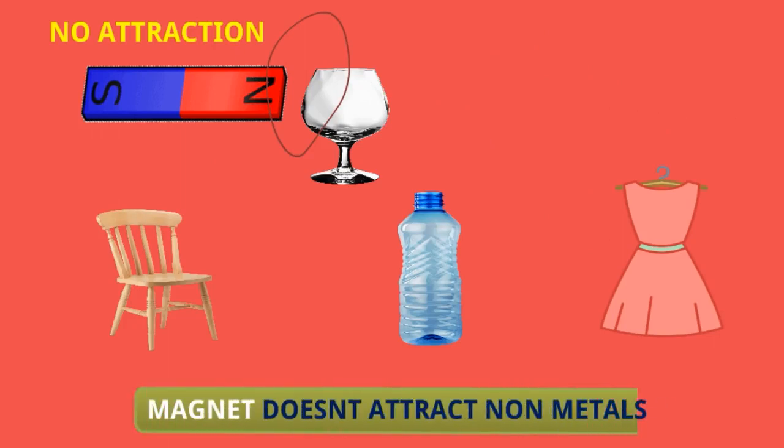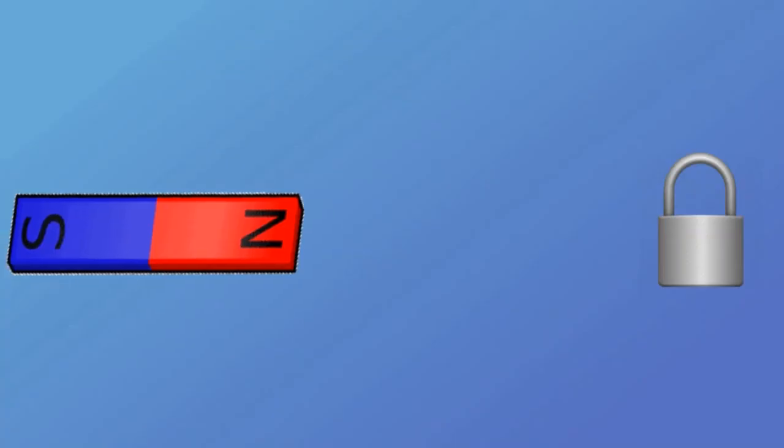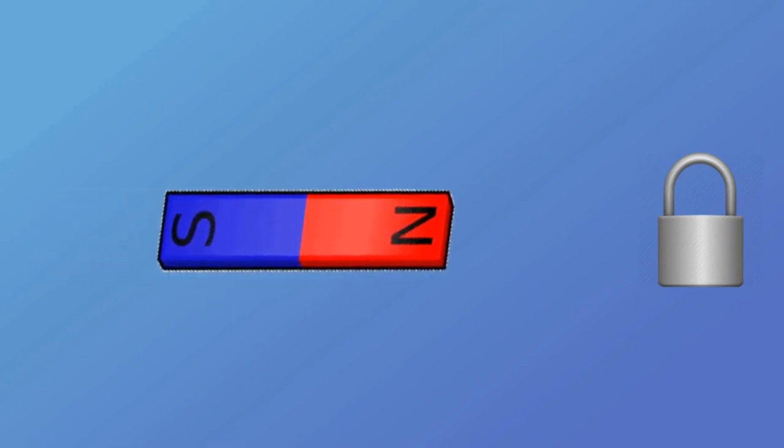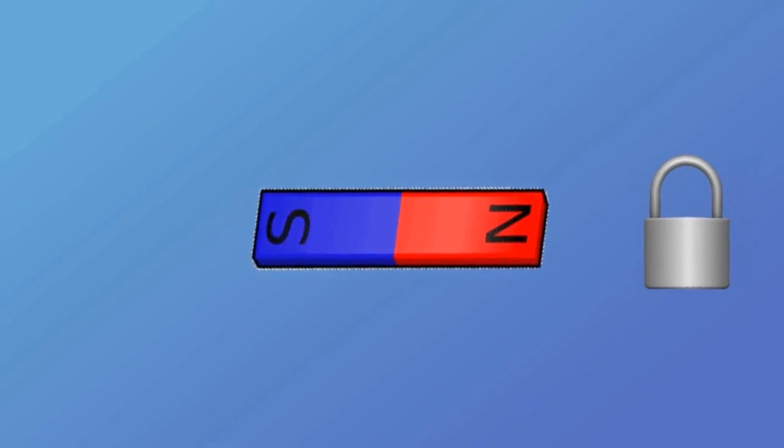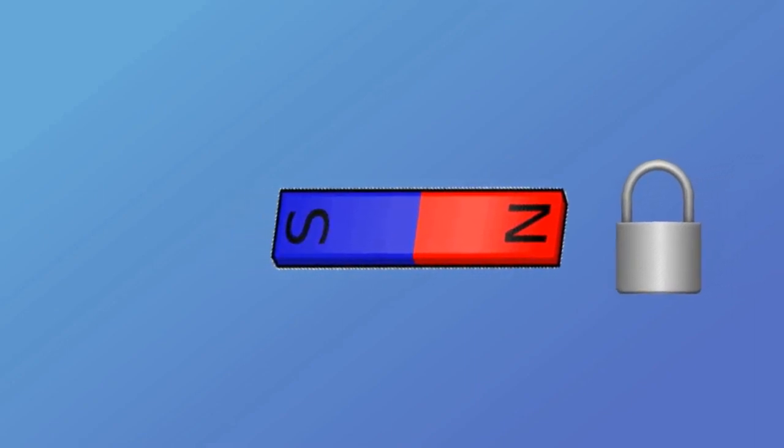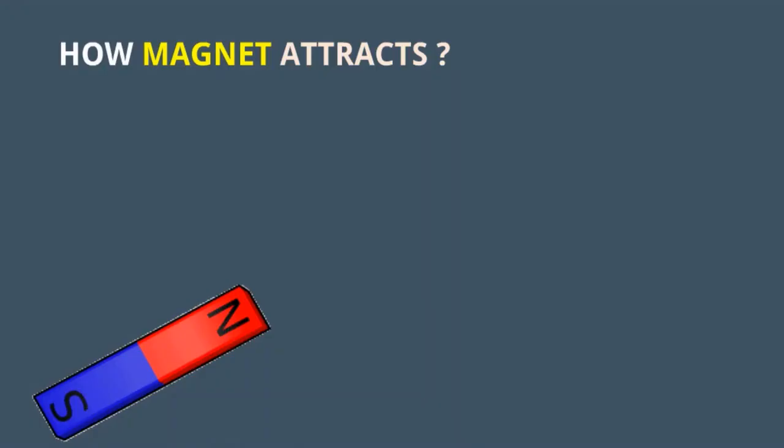So how does this attraction happen? Magnet comes towards this metal and metals are also attracted by the magnet. Initially lock is not moving but when this magnet is near to the lock, lock is starting to move and it is stuck on the magnet. We'll see closely how magnet attracts. So initially there is no contact between magnet and these metals. We have already seen up to a certain distance there will not be any movement of the metals.